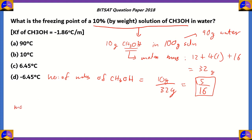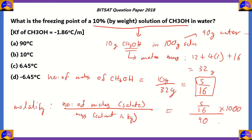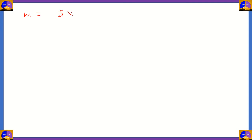Now we find molality: molality = number of moles of solute divided by mass of solvent in kg. The solvent is 90 grams of water = 90/1000 kg. So molality = (5/16) divided by (90/1000) = 5×1000 divided by 16×90 = 5000 divided by 1440. The molality of the 10% methanol solution is approximately 3.47 molal.